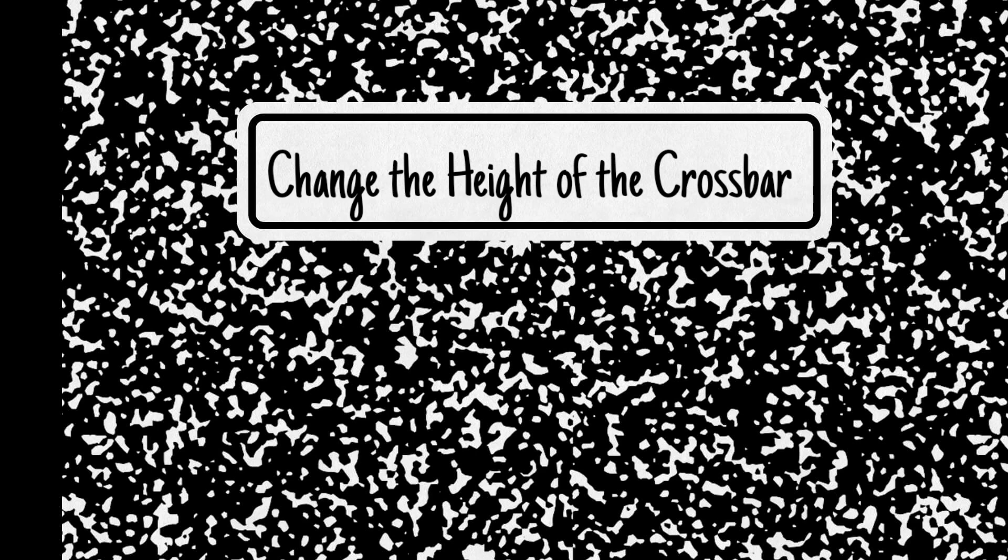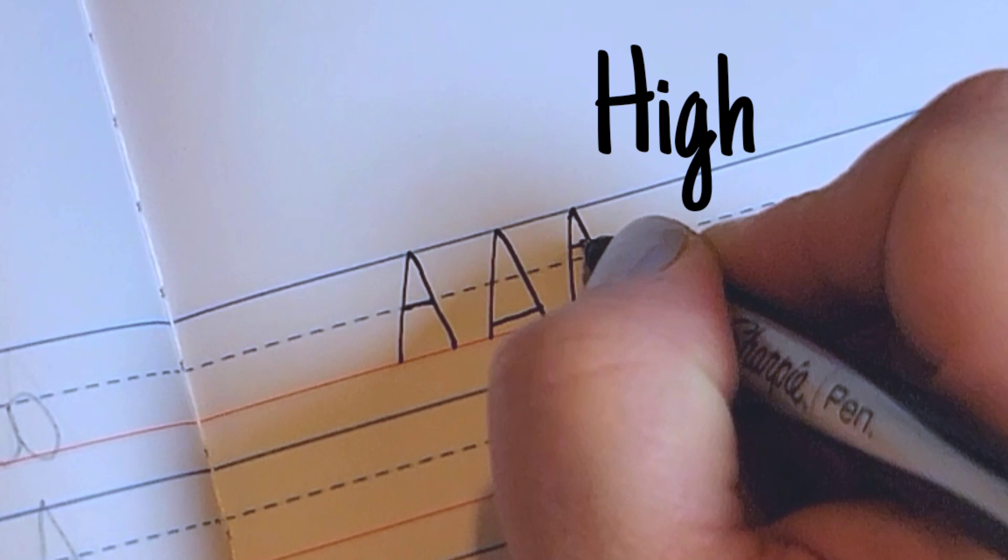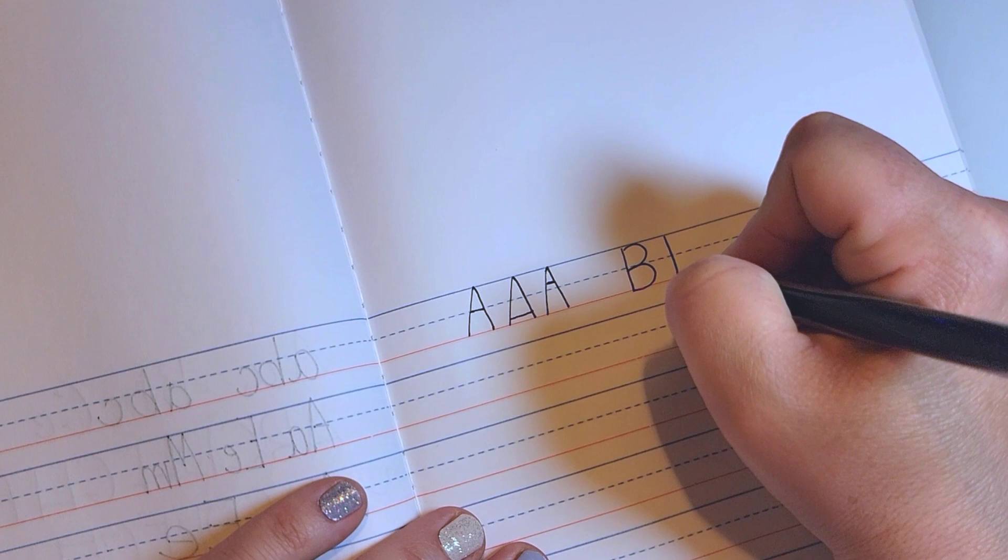The last way you can change up your writing is to change the height of the crossbar. So this is the line that goes across an A or an H. So you can do it in the middle, you can do it low, or you can do it high. Check out some variations of this with some other letters.